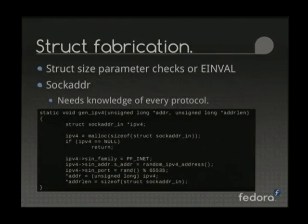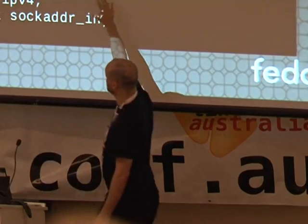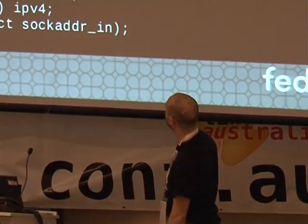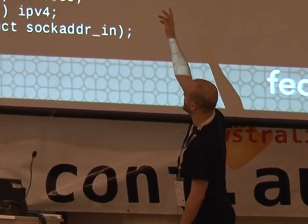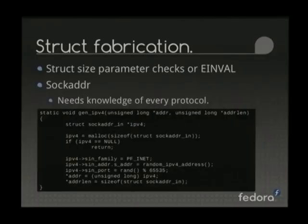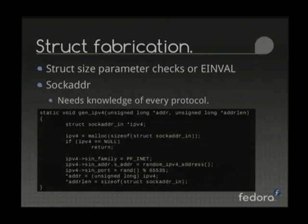Struct fabrication: certain structures need to be annotated. If a syscall takes a sock_addr, it picks a random network protocol and generates one. For an IPv4 sock_addr, it mallocs the right size and fills in something that looks like a reasonable struct, because the kernel validates these things immediately — if the size doesn't match the length argument, it'll just EINVAL. You have to give it something that looks semi-viable. The downside is this requires knowledge of every network protocol the kernel knows, which is a ton of work, but a lot of them have been done already.